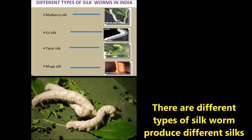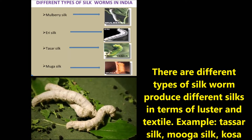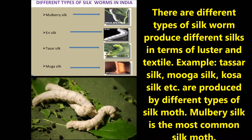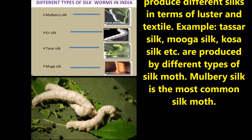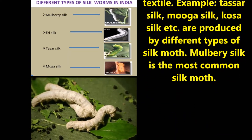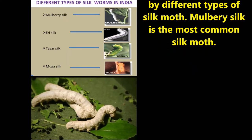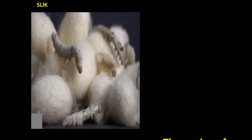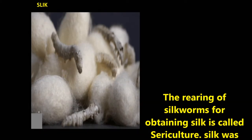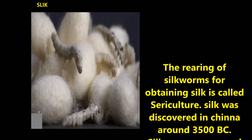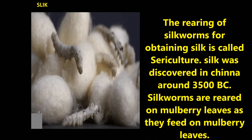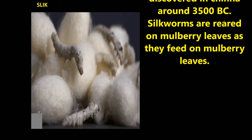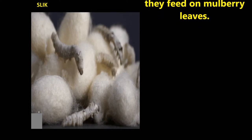Different types of silkworms produce different silks in terms of luster and texture. Examples include tasar silk, muga silk, kosar silk, etc. Mulberry silk is the most common type. The rearing of silkworms for obtaining silk is called sericulture. Silk was discovered in China around 3500 BC. Silkworms are reared on mulberry leaves, as they feed on mulberry leaves.